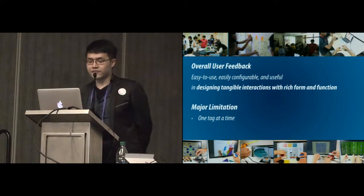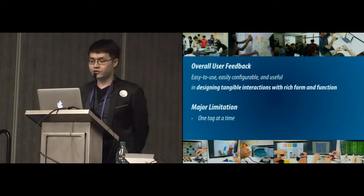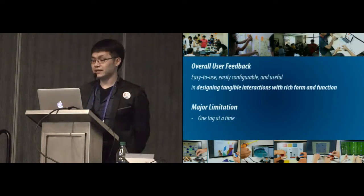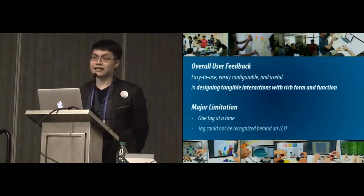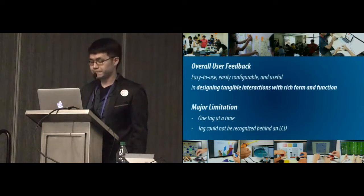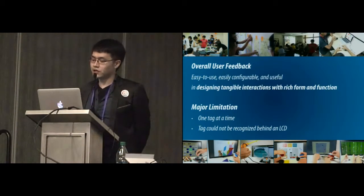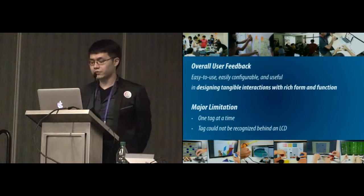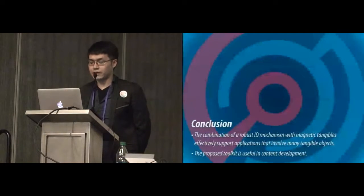But the results were affected by two major limitations. First, the high-frequency RFID can only read one tag at a time, so they need multiple readers to read multiple tags at the same time. Second, unlike Gauss beads, RFID could not be recognized behind an LCD, so causing the indirect mapping of token operations. Using portable projectors as visual display can be a possible solution.